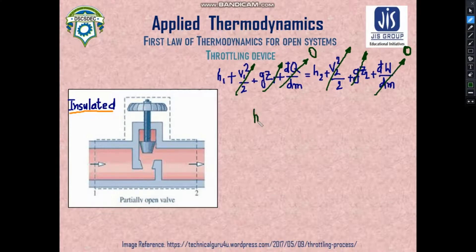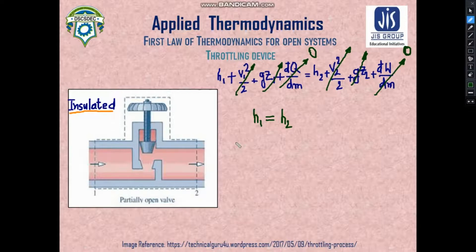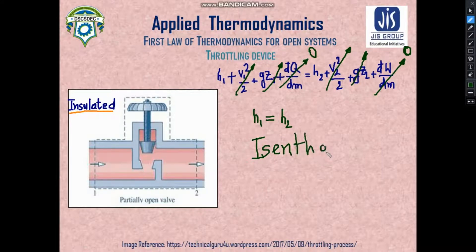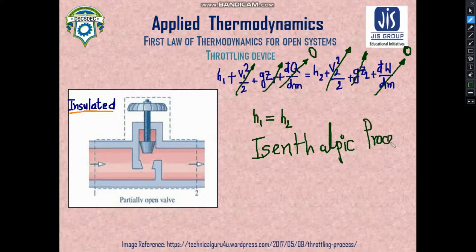For a throttling device, after all simplifications, the equation shows that enthalpy remains constant throughout the process. This means throttling is an isenthalpic process — enthalpy remains constant throughout the throttling process.